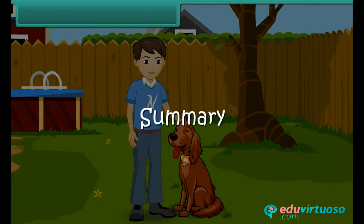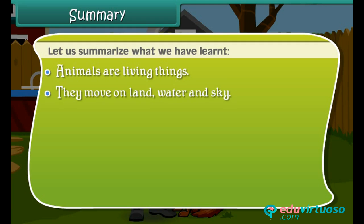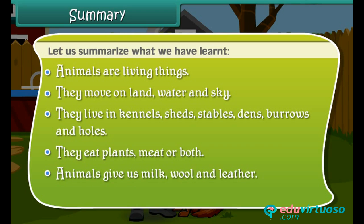Let us summarize what we have learnt. Animals are living things — they move on land, water and sky. They live in kennels, sheds, stables, dens, burrows and holes. They eat plants, meat, or both. Animals give us milk, wool and leather. We should treat animals with love.